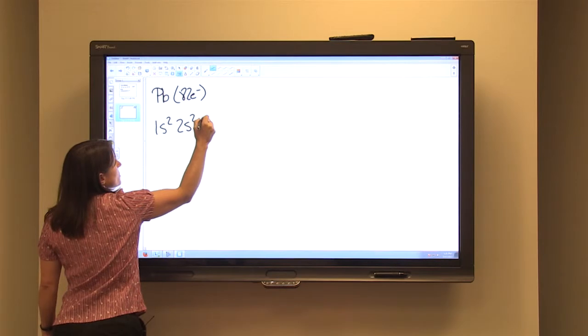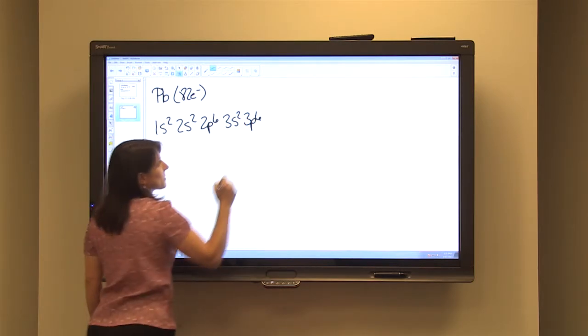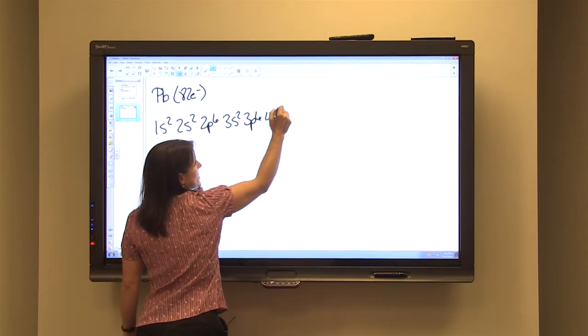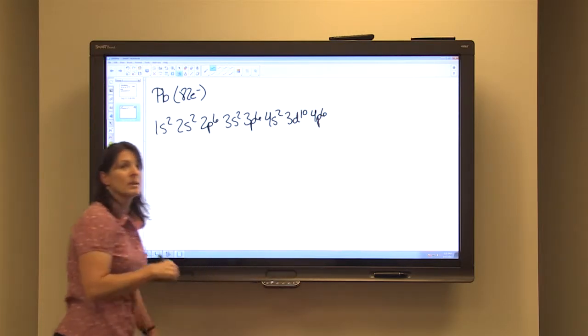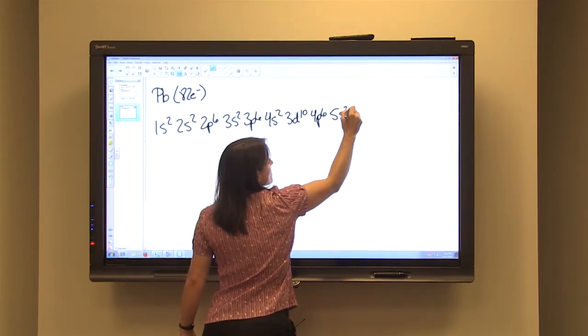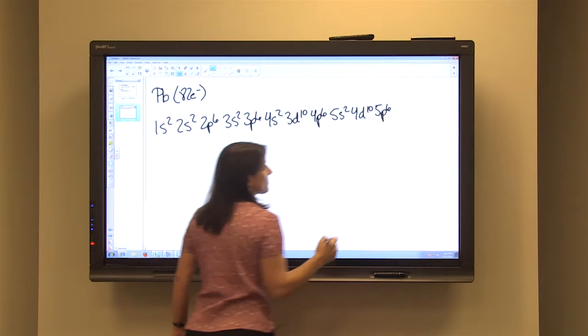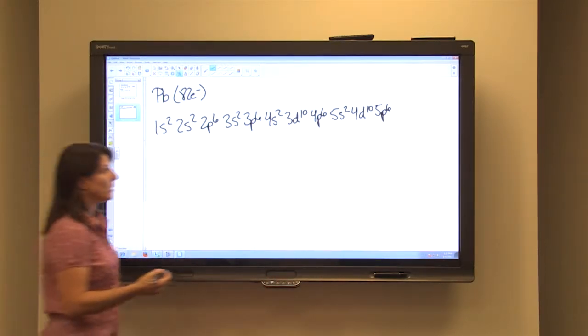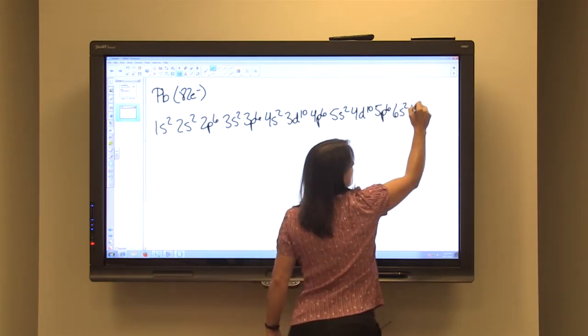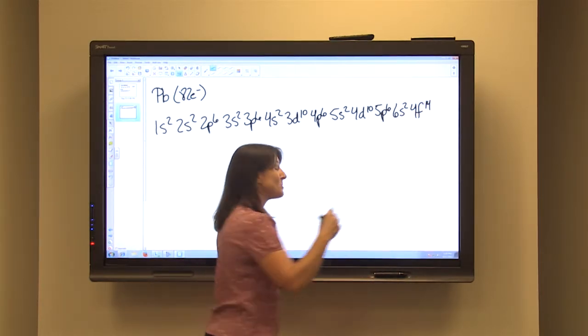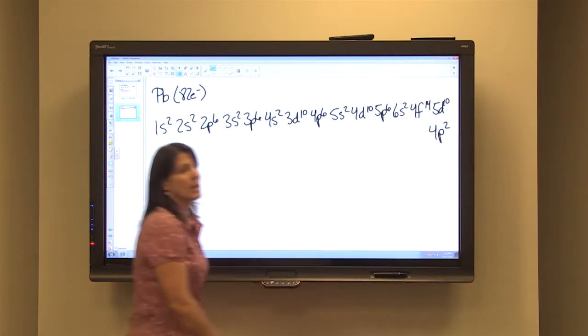Let's write that out. 1s², 2s², 2p⁶. Completed the second row. 3s², 3p⁶. Completed the third row. Fourth row is when the d's start. So after 4s², we have 3d¹⁰, then 4p⁶. Completed the fourth row. We're on to the fifth row. 5s², then for the d, it's 4d¹⁰, then back to 5p⁶. After 5p⁶, we're on to the sixth row. So we have 6s². That's where we break out and go down to the lanthanides. So 4f¹⁴. We come back up to the d's. 5d¹⁰, and then 6p² will be our last level and sublevel.